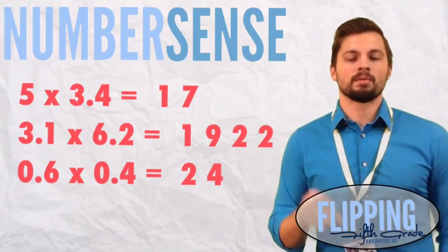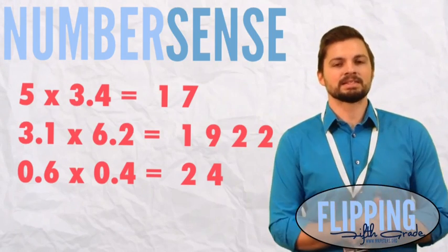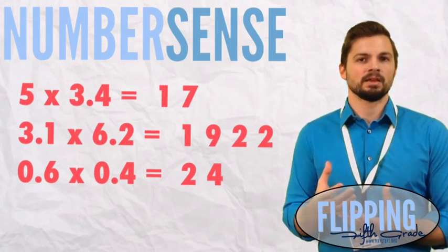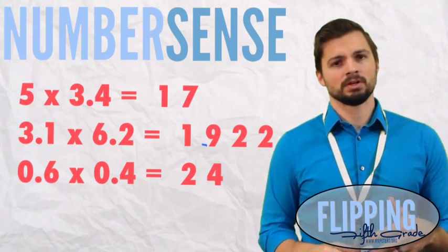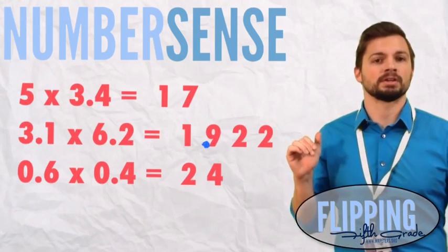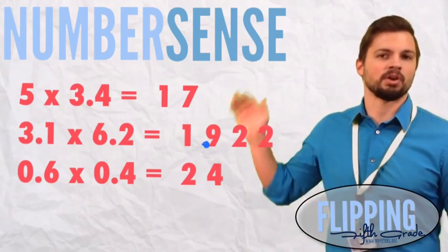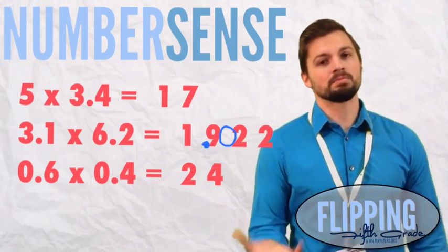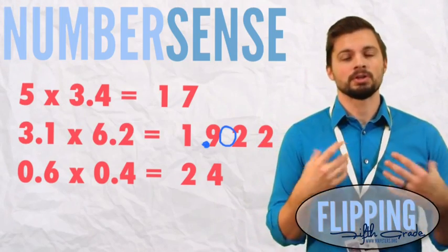So, when we're doing this problem, it makes sense that the answer should be about 15. Therefore, our answer should have a decimal after the 7. Now, when you have a decimal, you also want to put the 0 behind there. So, that makes sense. It's reasonable using our number sense.